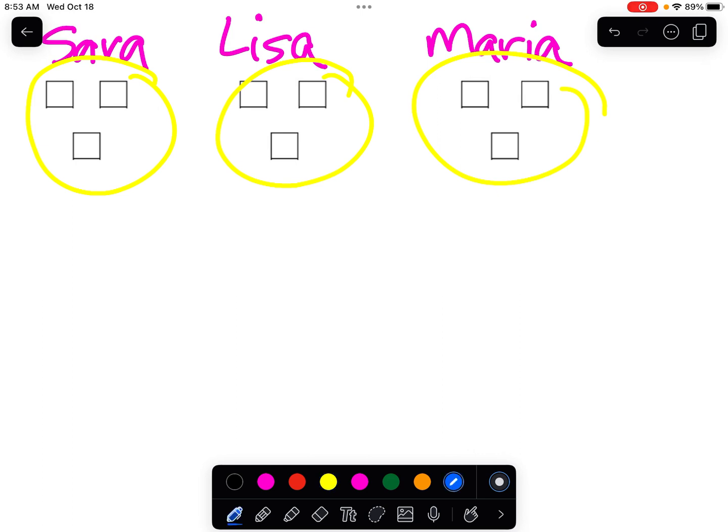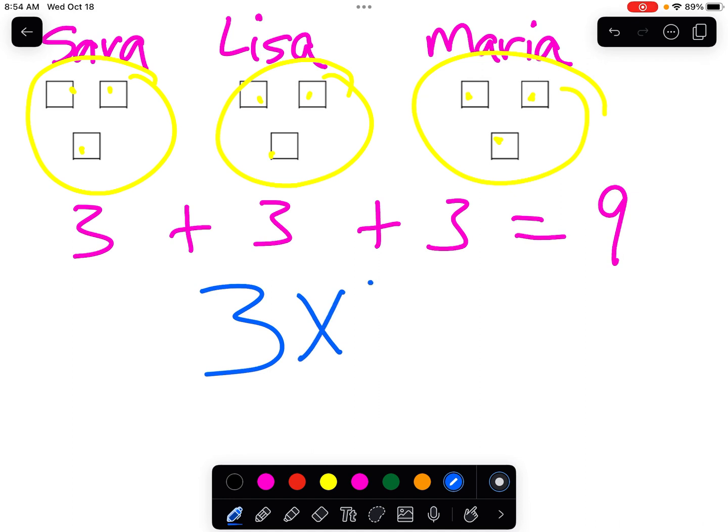So Sarah gets three cupcakes, Lisa gets three cupcakes, and Maria gets three cupcakes. And then my friend Maria says, 'Thank you so much for these cupcakes. How many cupcakes did you make in all for us?' Well, let's do the math. I gave three to Sarah, plus three to Lisa, plus three to Maria. We're going to count them. One, two, three, four, five, six, seven, eight, nine. So the answer is, I made nine cupcakes in all. And if we're going to do the multiplication equation, it's three groups of three, or three times three, and that equals nine.